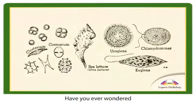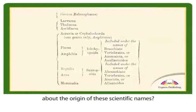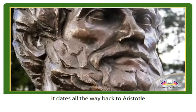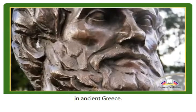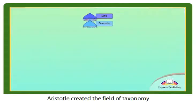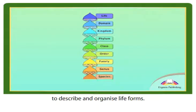Have you ever wondered about the origin of these scientific names? It dates all the way back to Aristotle in ancient Greece. Aristotle created the field of taxonomy to describe and organize life forms.